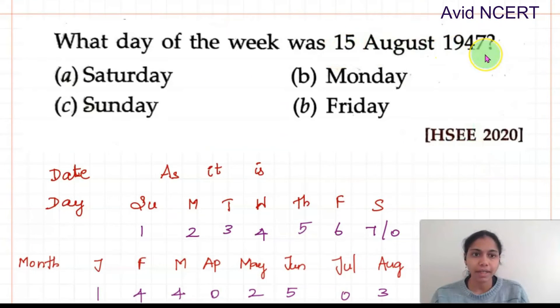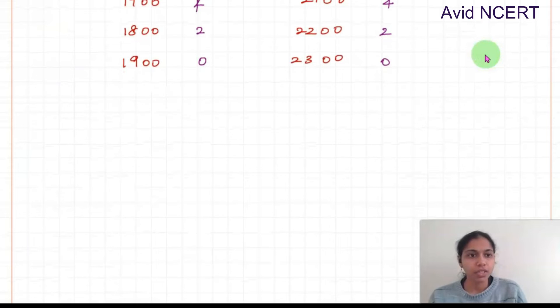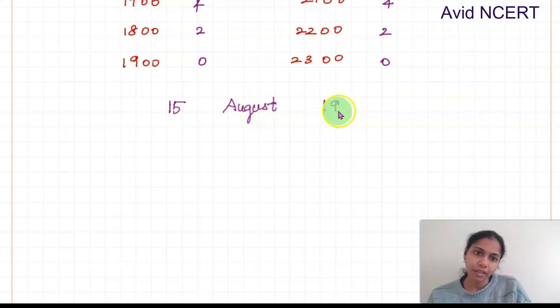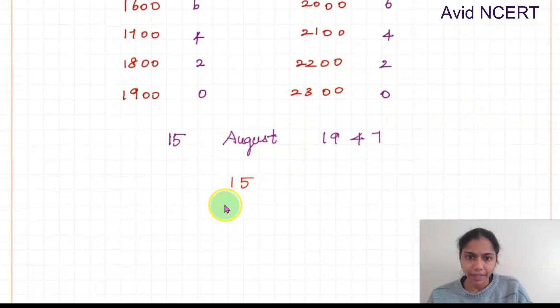Now the question here is 15 August 1947. We are going to just substitute all the codes here. The code for date is as it is, which is 15. The code for August is 3. We are writing that down, which is 03 or you can just take 3.